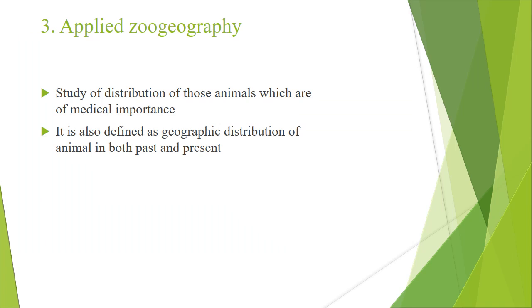Next is applied zoogeography. The word 'applied' means applied use in society — we are getting benefit from it. Applied zoogeography is defined as the study of distribution of those animals which are of medical importance. It is also defined as the geographic distribution of animals in both past and present. In applied zoogeography we not only study medically important animals but also explore species that are economically important.